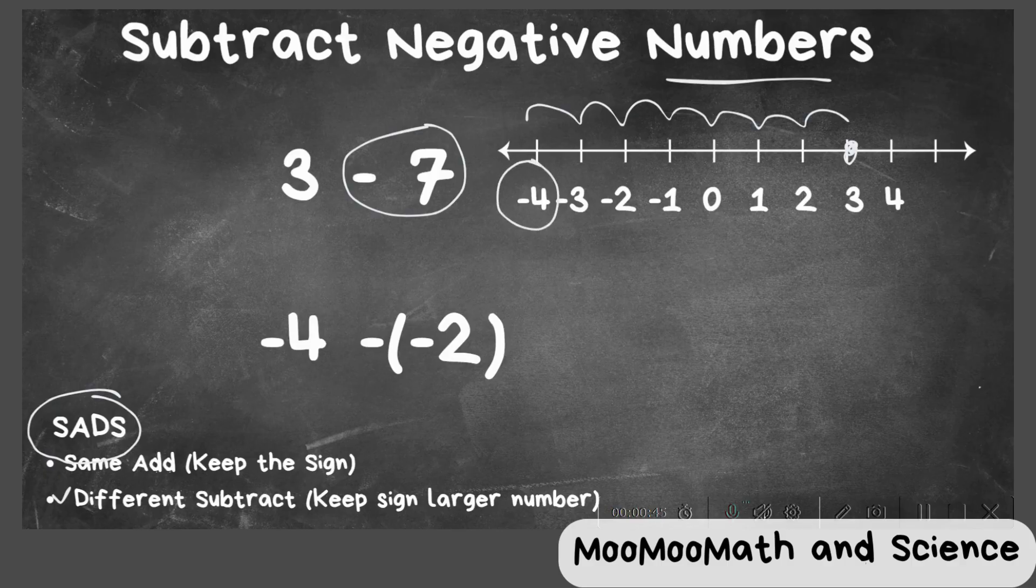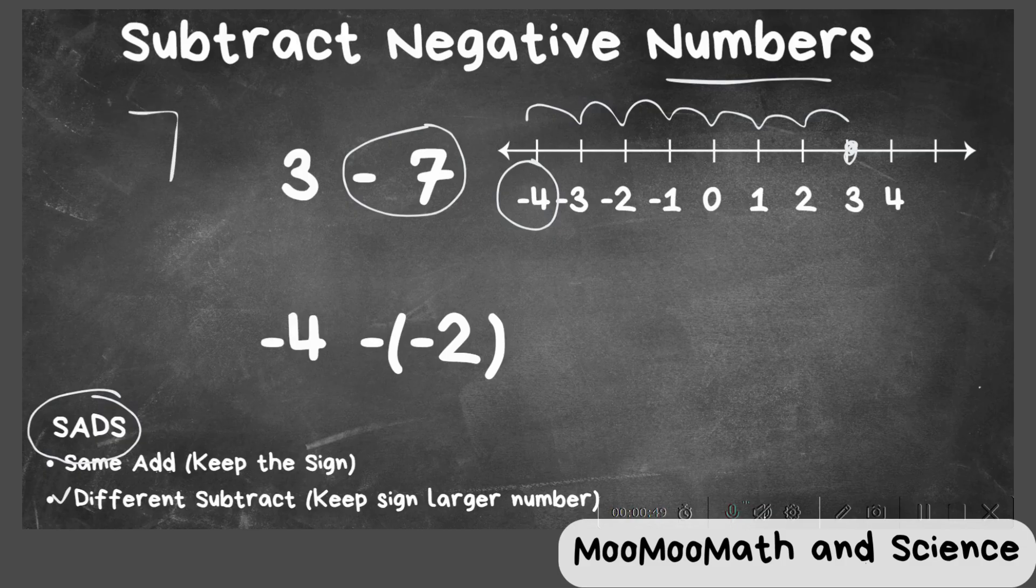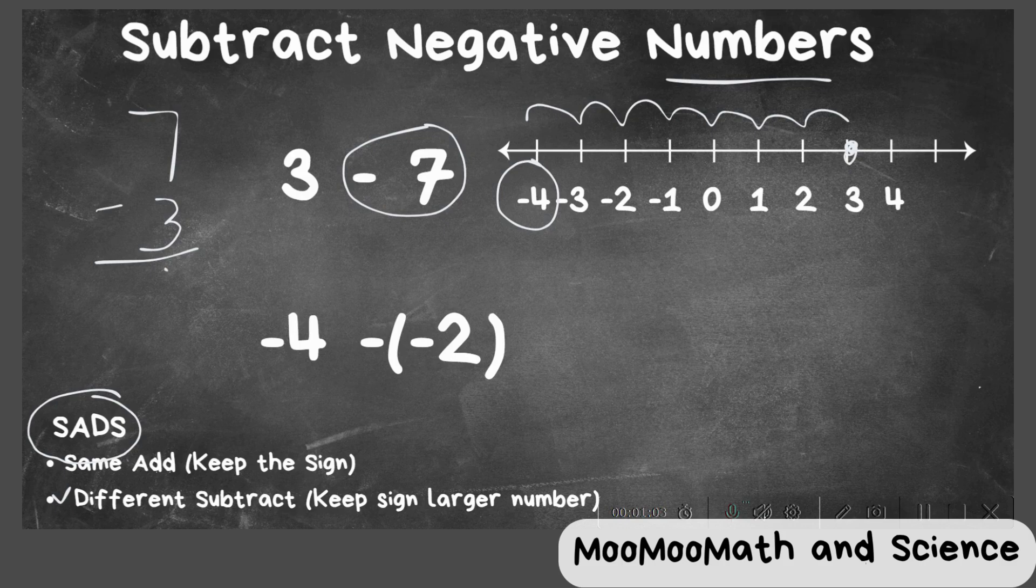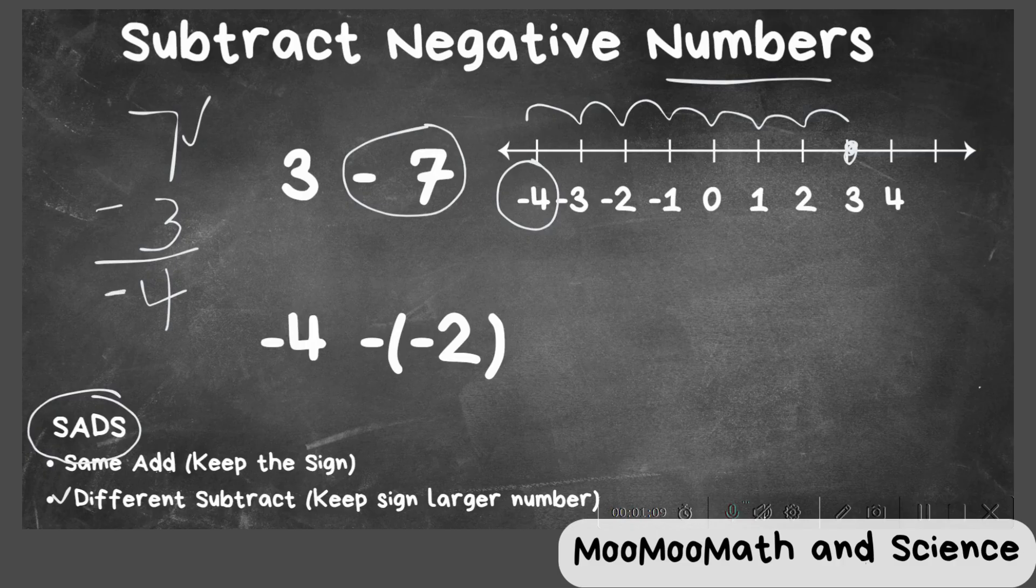Now let's apply SADS. Let's place the first number on top and you'll notice you have opposite signs, so we are going to subtract. And then we're going to place the 3 underneath. So we have a positive and a negative. When we subtract, that means we have 4. 7 is the larger number, so it becomes negative 4.